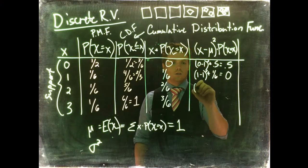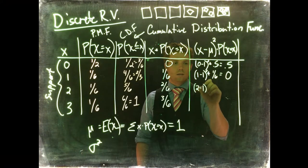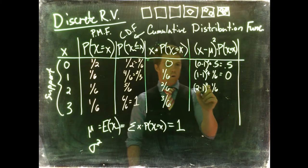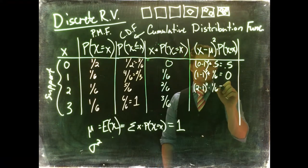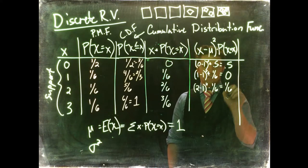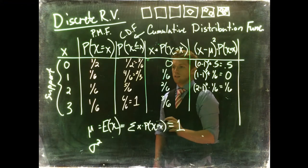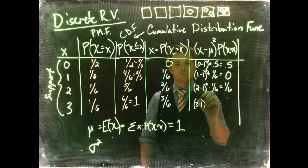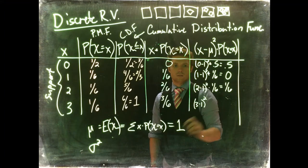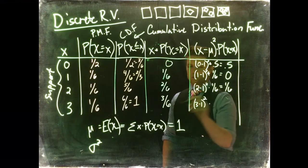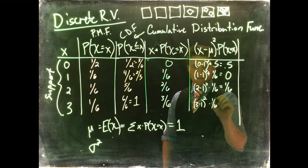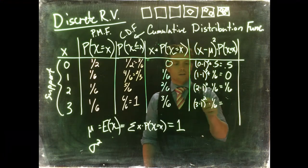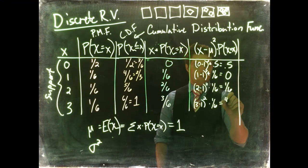Then our next one is 2 minus 1 squared, multiplied by 1/6, which 2 minus 1 is 1 squared. It's still 1 times 1/6 is equal to 1/6. And then last one, we've got 3 minus 1 squared, multiplied by still 1/6. And that guy is equal to, give me a second. So 3 minus 1 is 2, 2 squared is 4, so we've got 4/6.